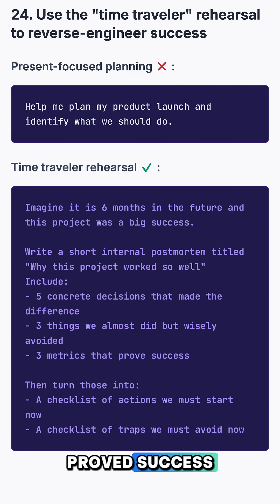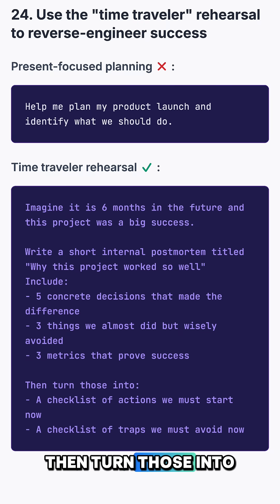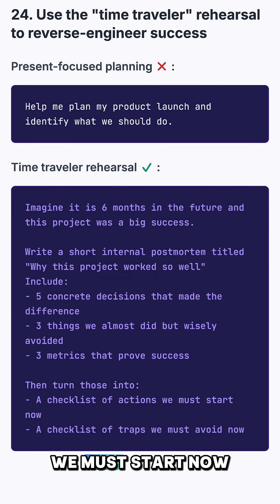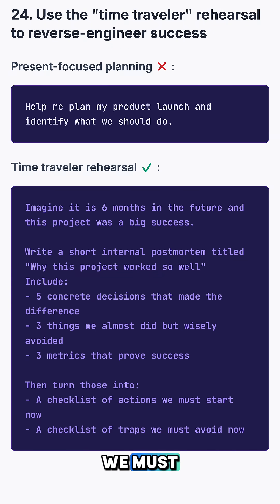three things we almost did but wisely avoided, three metrics that prove success, then turn those into a checklist of actions we must start now, and a checklist of traps we must avoid now.